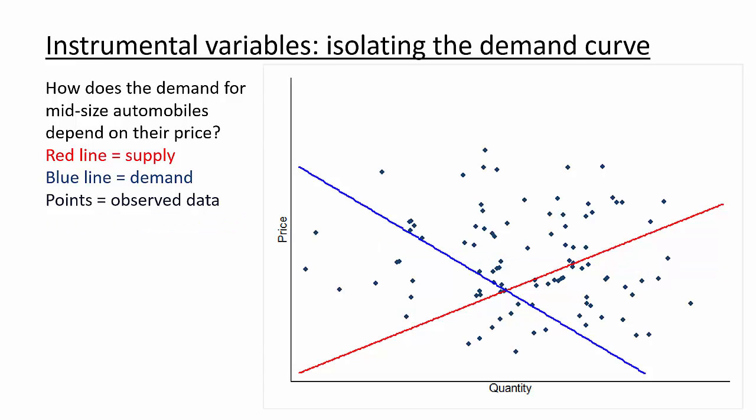The key to instrumental variables is using some additional information to help us see only the demand relationship. Note that if only the supply curve is shifted, the equilibrium points will all lie along the same demand curve. Although it's hard to find a situation where only the supply curve shifts, we might be able to collect data on some other factor that affects supply only. For example, the price of steel is likely to shift supply because it influences manufacturing costs, but it is unlikely to shift demand since consumers probably do not care about the price of steel except for the way it affects the price of a car.